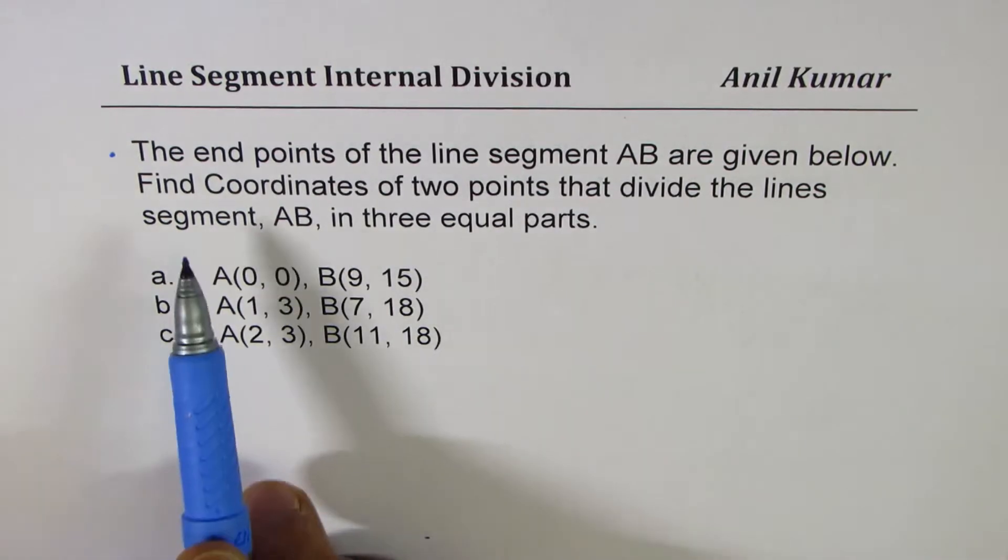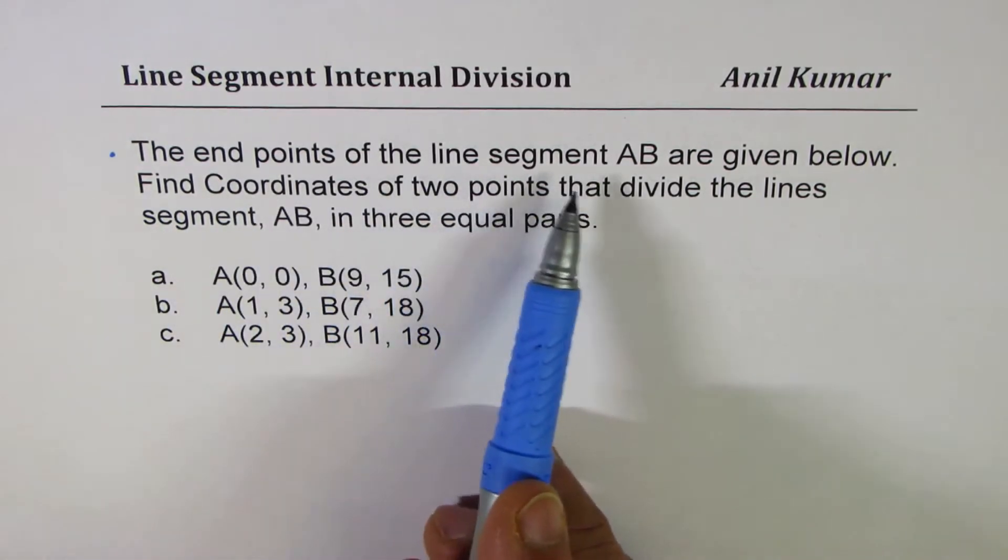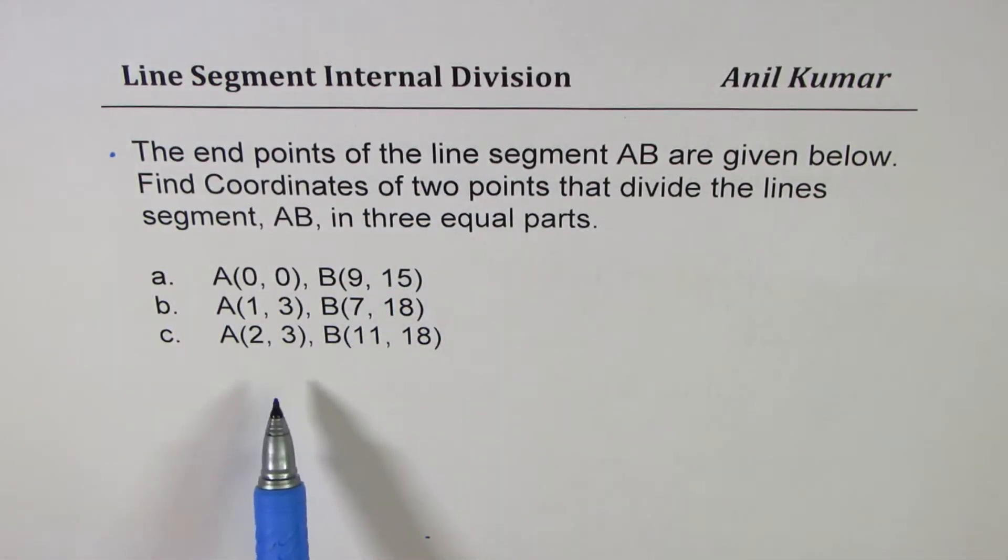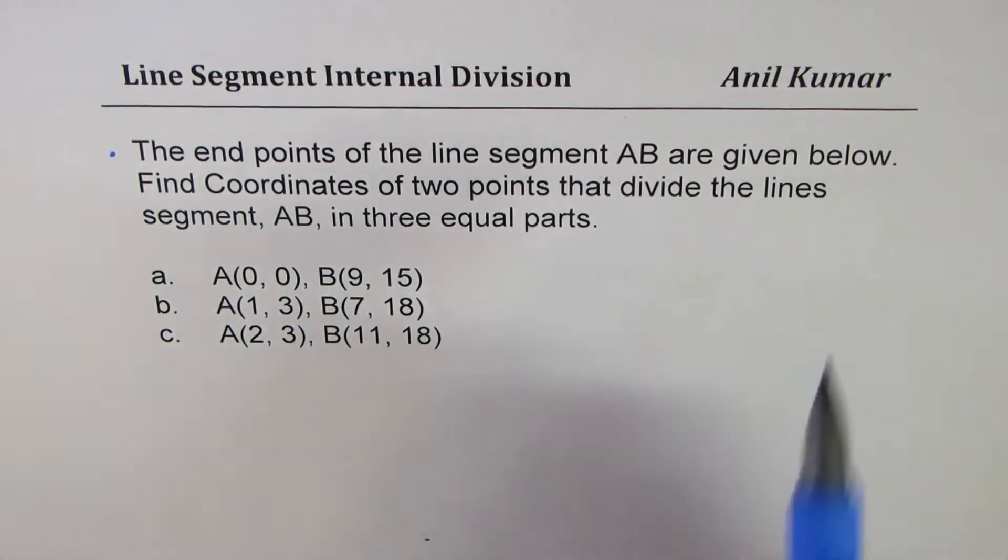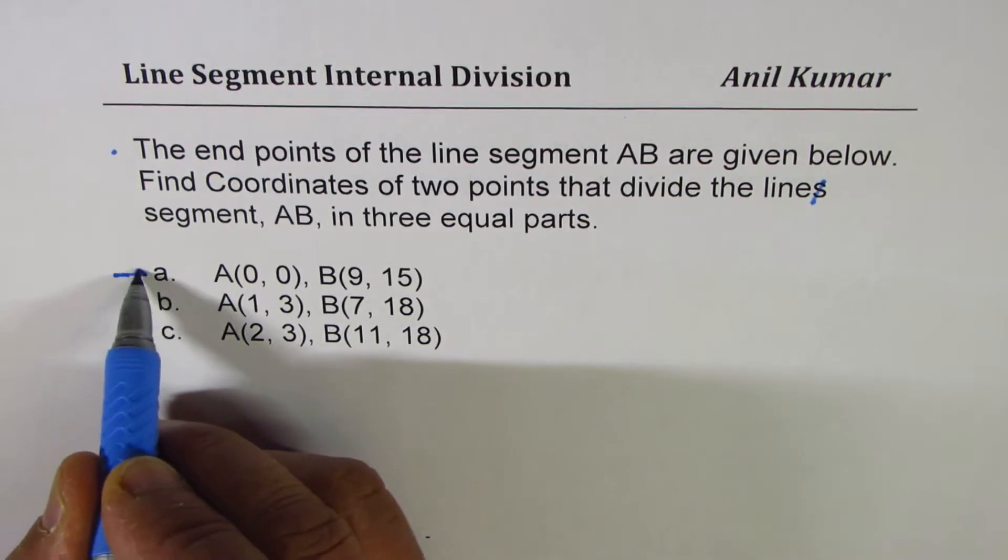The question is: the end points of the line segment AB are given below. Find coordinates of two points that divide the line segment AB in three equal parts. We'll take one by one, three examples.